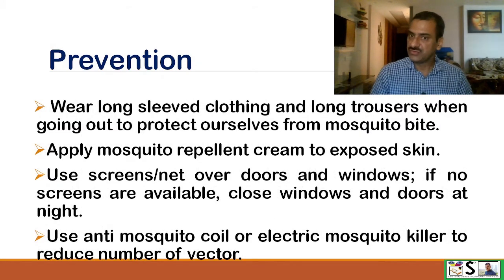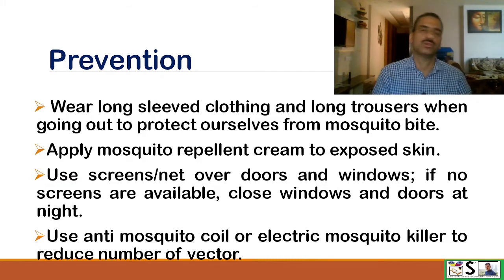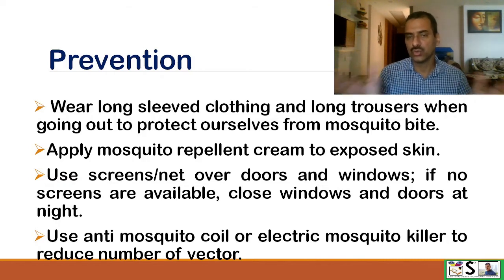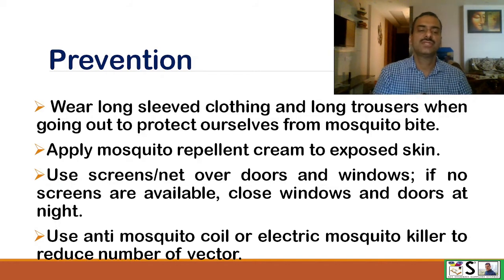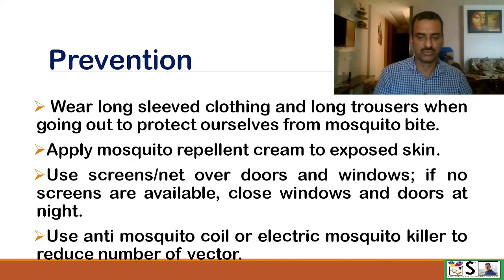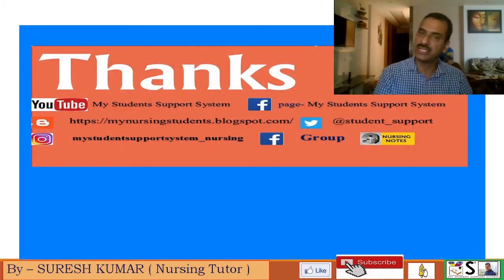Wear long-sleeved clothing and long trousers when going out to protect yourself from mosquito bites. Apply mosquito repellent creams to exposed skin. Use mosquito screens and nets over doors and windows; if no screens are available, close the windows and doors. At night, use an anti-mosquito coil, electric mosquito killer, or any other mosquito repellent to reduce the number of vectors. By these methods we can prevent Chikungunya.